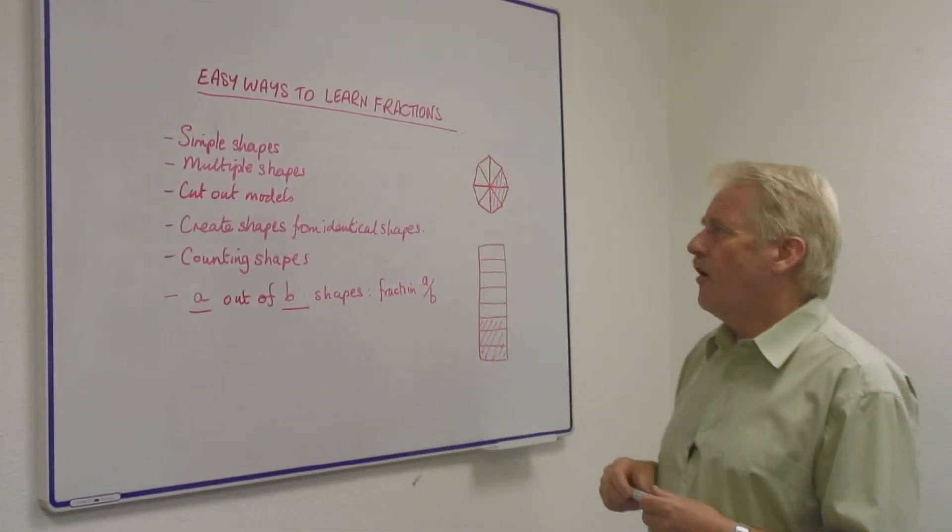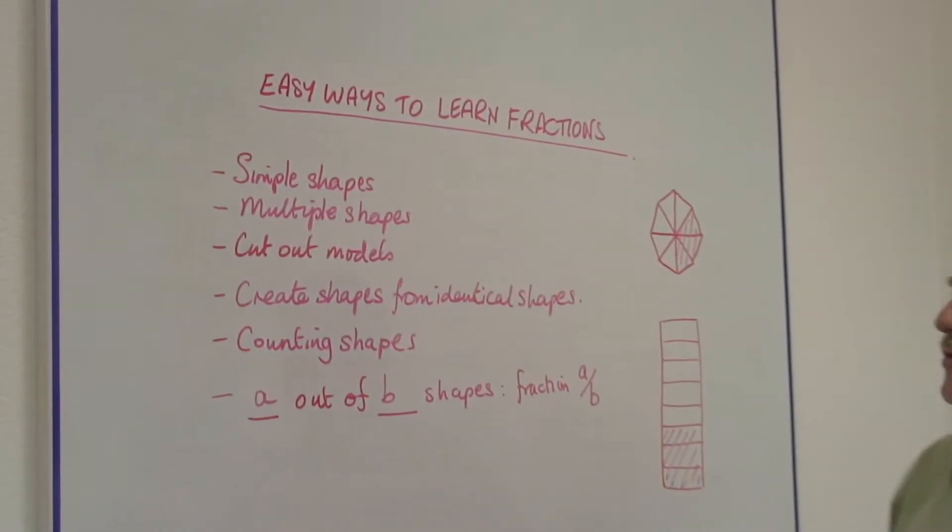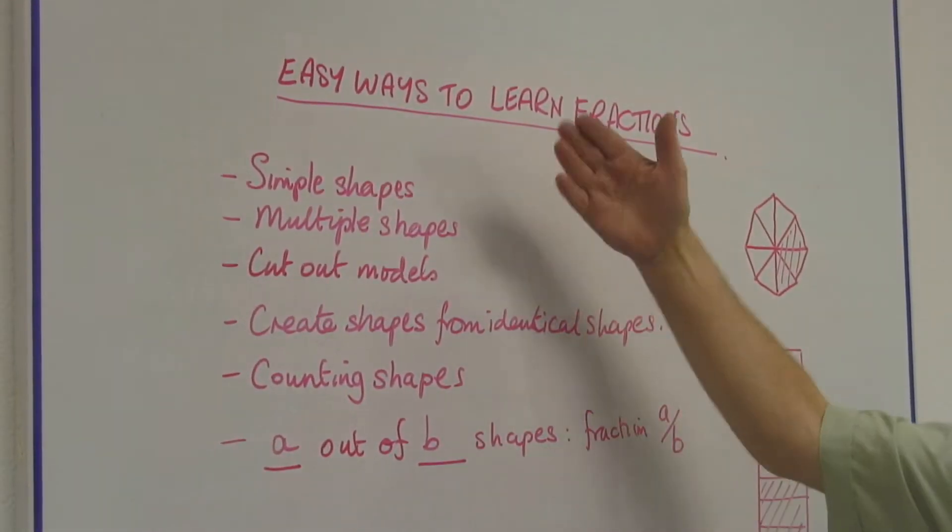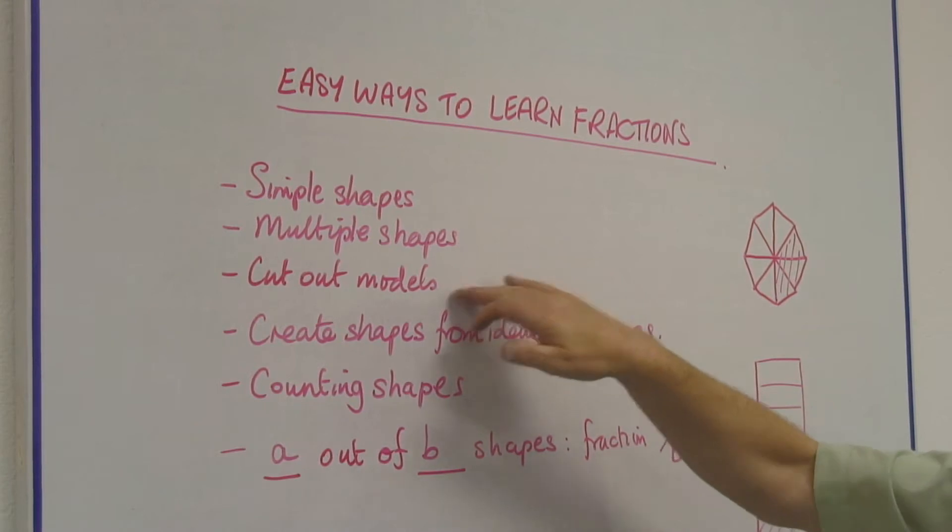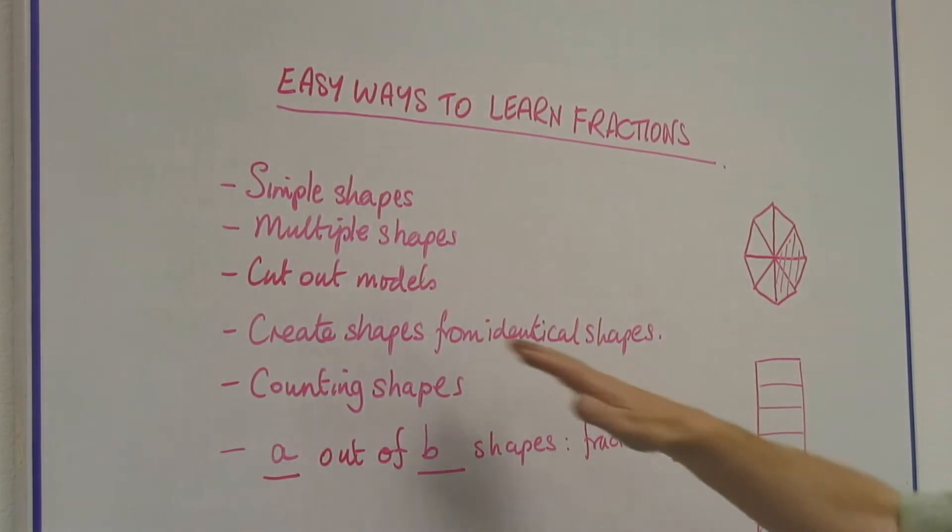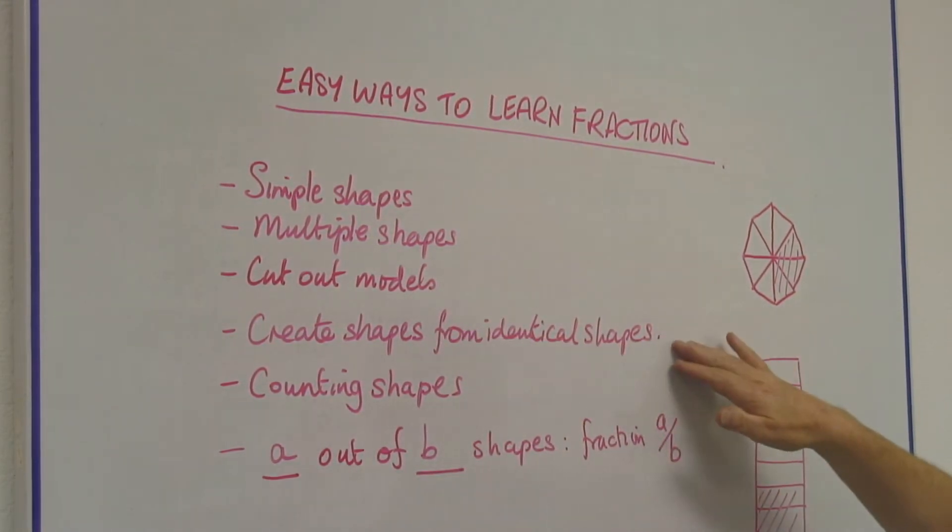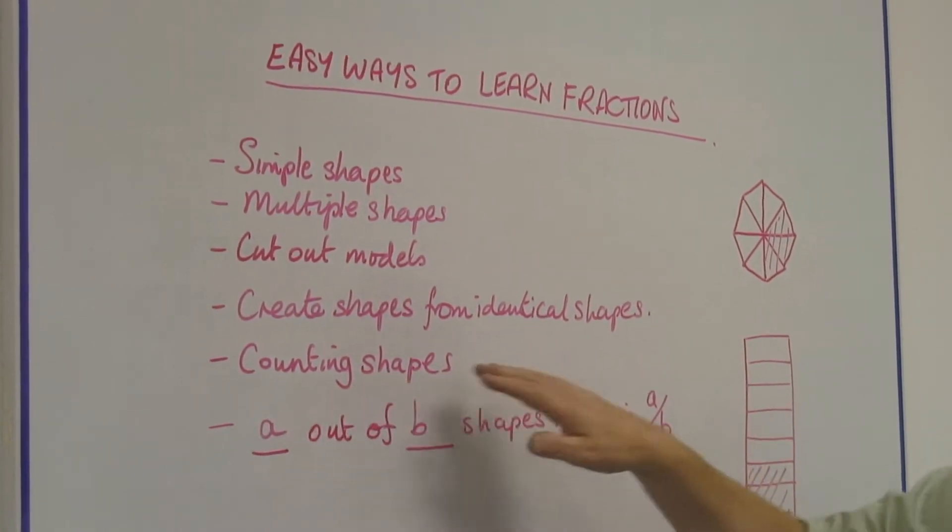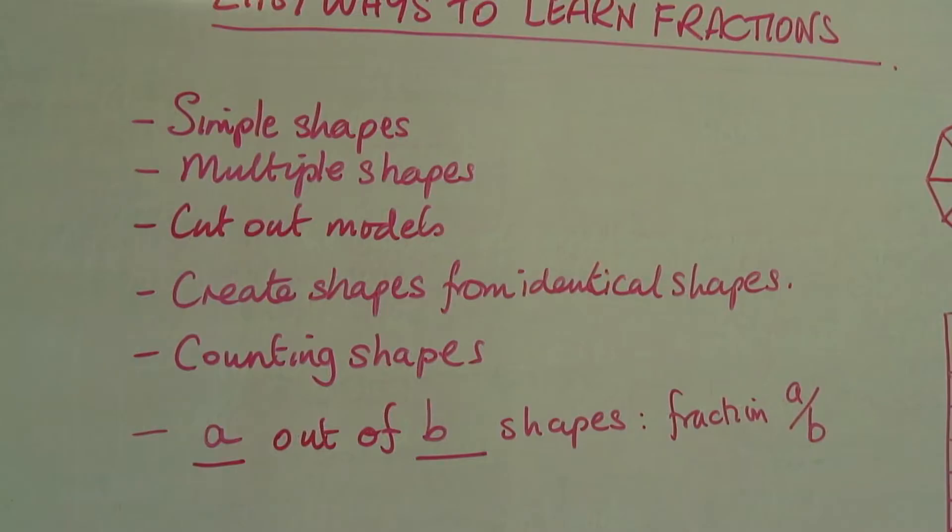It's obviously much easier if we start from simple shapes, create multiple shapes from that using maybe cut-out models, and then make sure that they're identical. And then all the proportion part is looking at counting the shapes afterwards.